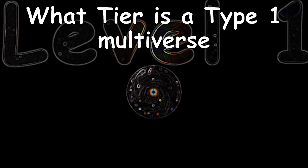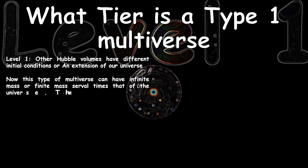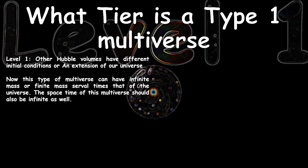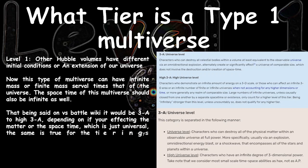What tier is a Type 1 multiverse? This type of multiverse has infinite mass, or finite mass several times greater than the observable universe. The space-time of this multiverse should also be infinite. On Versus Battle Wiki, it would be 3A to High 3A, depending on whether you're talking about the finite matter or the infinite space-time — and the same will be said for the tiering of character stats and profile.